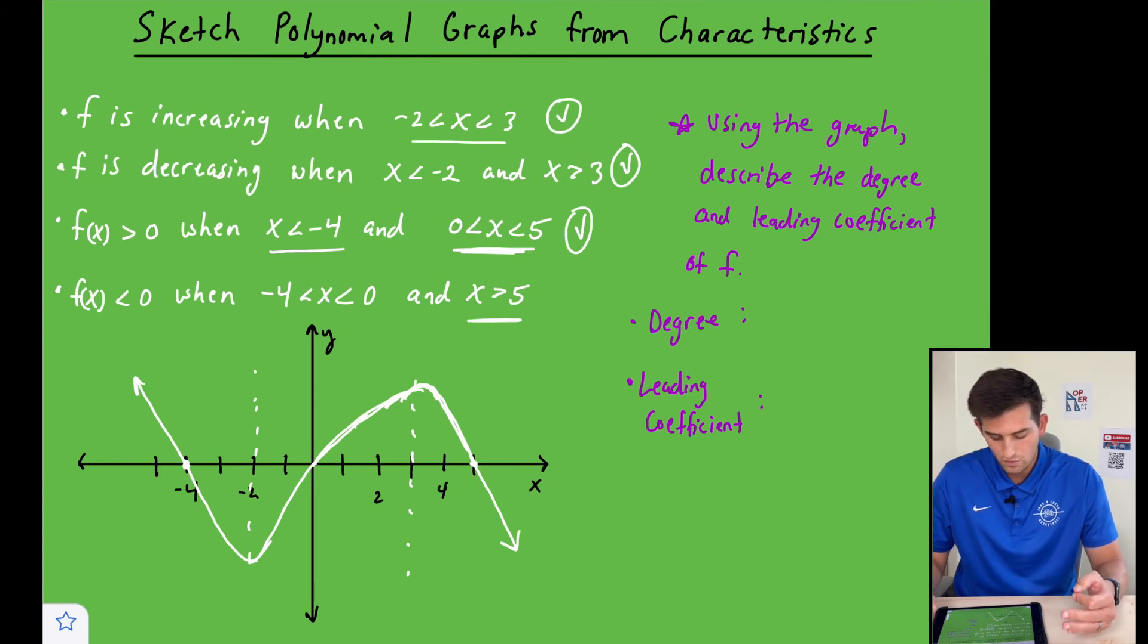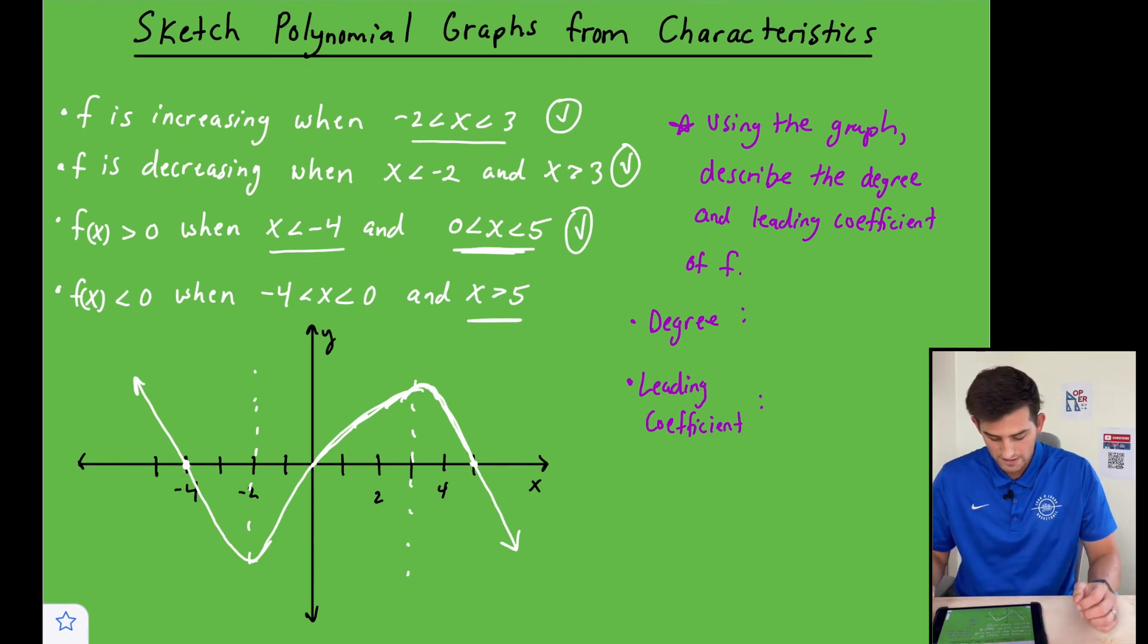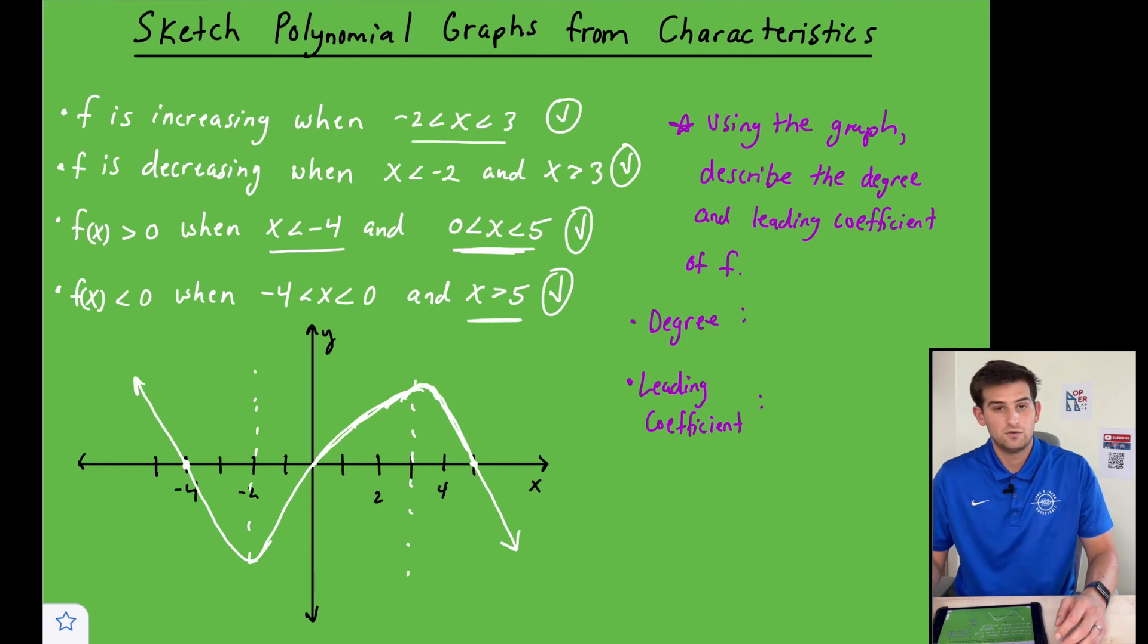And now on the last one, it says f of x is less than zero when x is between negative four and zero. And so negative four and zero would be this section of our graph right there. And notice how that's below our x-axis, and also when x is greater than five. So that point right there. So we are good. That's what our graph would look like.